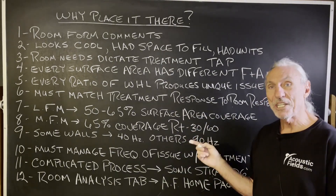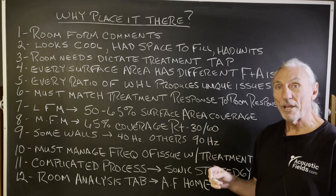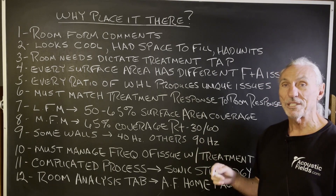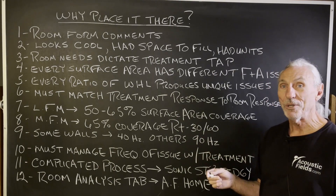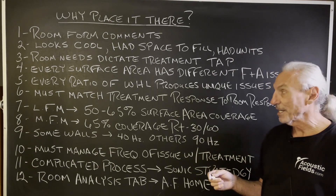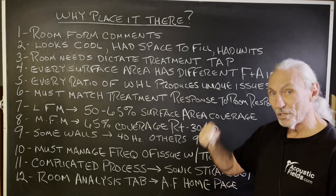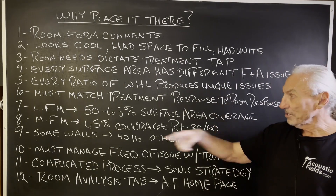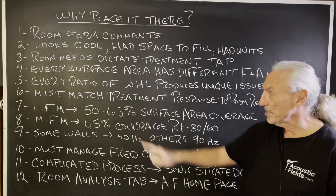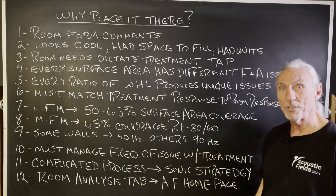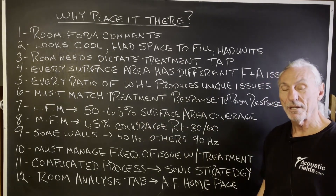Our ACDA units are five foot tall for a reason, because most of them go in eight-foot ceiling heights. So with five-foot units in an eight-foot ceiling, you can see that 50 to 65 percent surface area coverage.